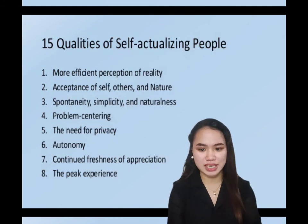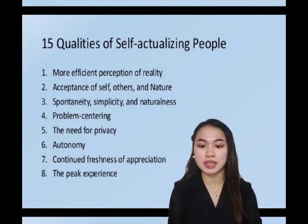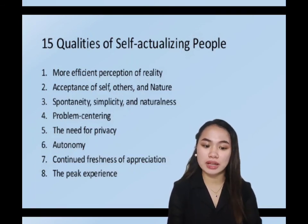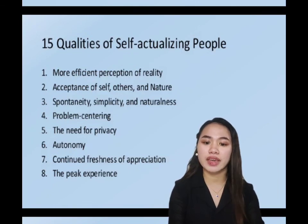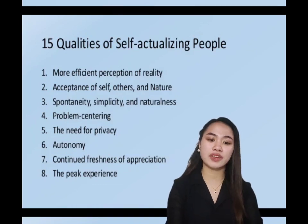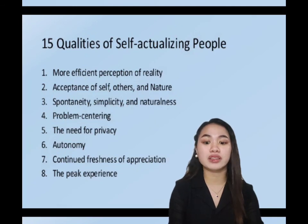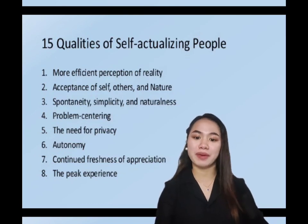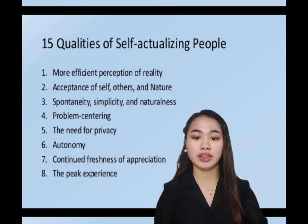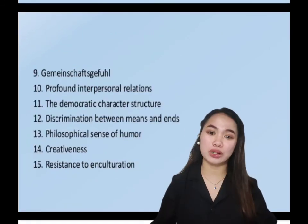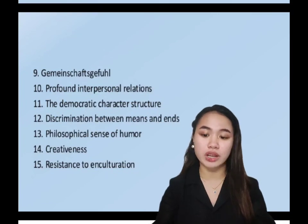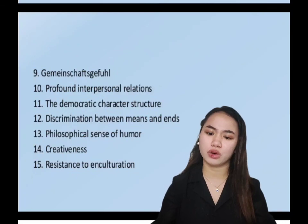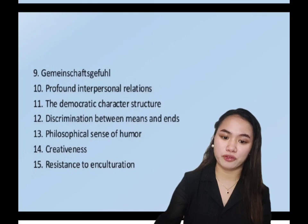The fifth quality is the need for privacy — self-actualizing people have a quality of detachment that allows them to be alone without being lonely. The sixth quality is autonomy — they depend on themselves for growth, even though at some point in their past they had to have received love and security from others. The seventh quality is continued freshness of appreciation — they are keenly aware of their good physical health, friends and loved ones, economic security, and political freedom. The eighth quality is peak experience — as Maslow's study continued, he discovered that many of his subjects had experienced moments that were mystical in nature, giving them a feeling of transcendence. The ninth quality is Gemeinschaftsgefühl — self-actualizing people possess what is Adler's term for social interest, community feeling, or a sense of oneness with all humanity.